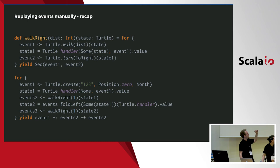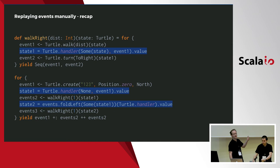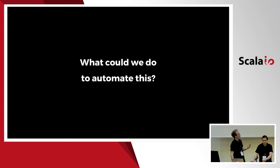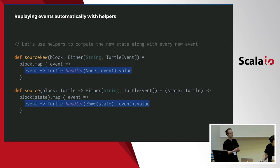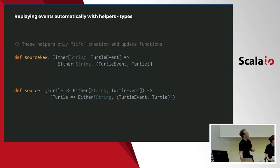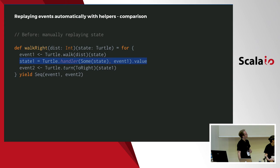This is the code we just saw — we have intermediate steps and we'd like to get rid of them. One way is to automate it. We see a recurring pattern: emit an event, replay it, emit, replay. We can extract this into some helper methods, handling two different cases: creation and updates. The trick is simple — after emitting the event from the block of code, we associate the resulting state to the event. If we look at the type signatures of those two functions, we are starting to lift events into tuples where the resulting state is associated to the event. This intuition of lifting will be important later.